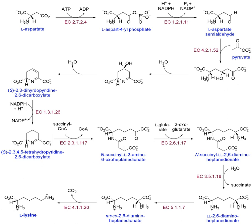The last stage of translation occurs when a stop codon enters the A-site. The following steps then occur: (1) recognition of stop codons by release factors, which causes hydrolysis of the polypeptide chain from the tRNA in the P-site; (2) release of the polypeptide chain; and (3) dissociation and recycling of the ribosome for future translation processes. A summary table of the key players in translation is found below.